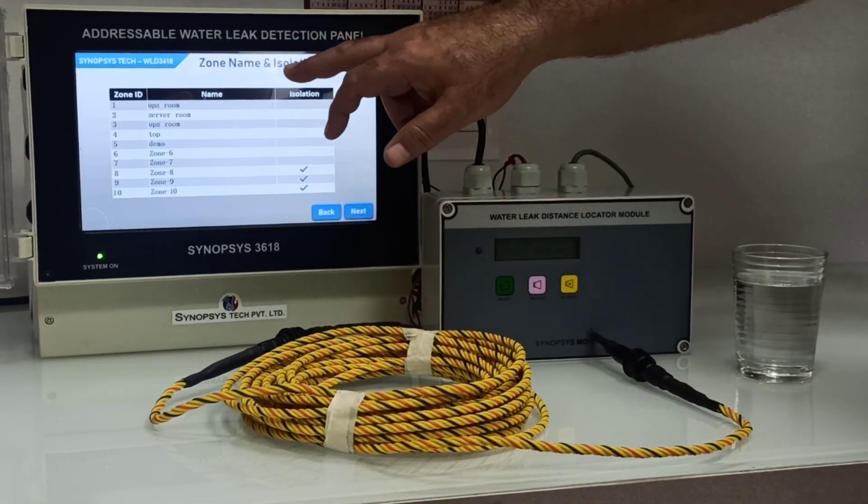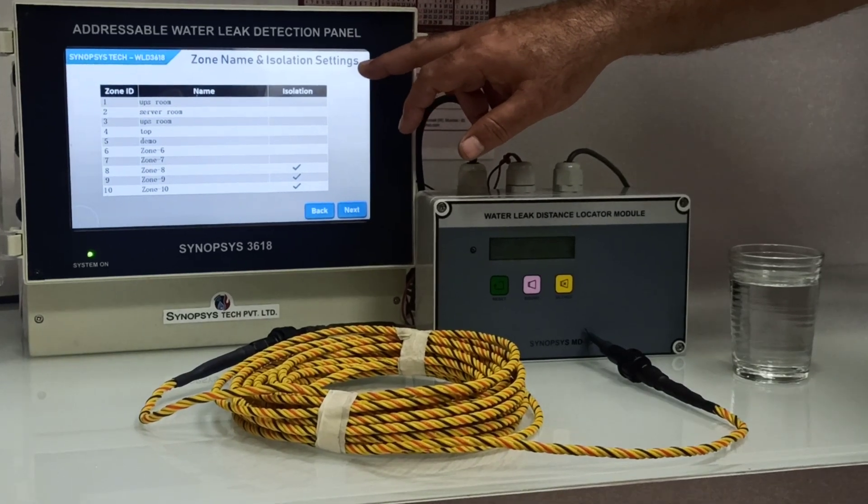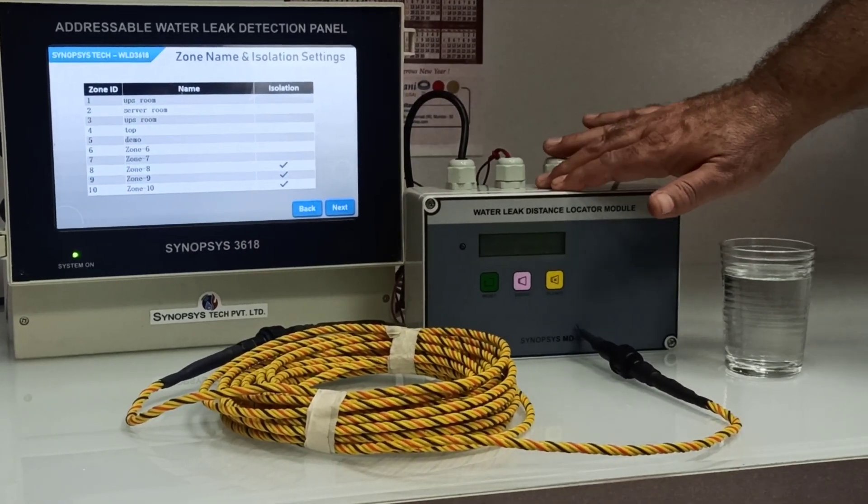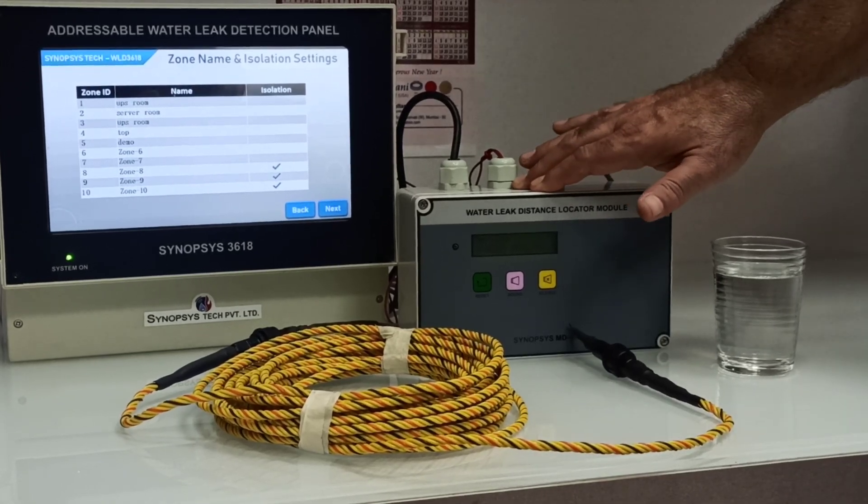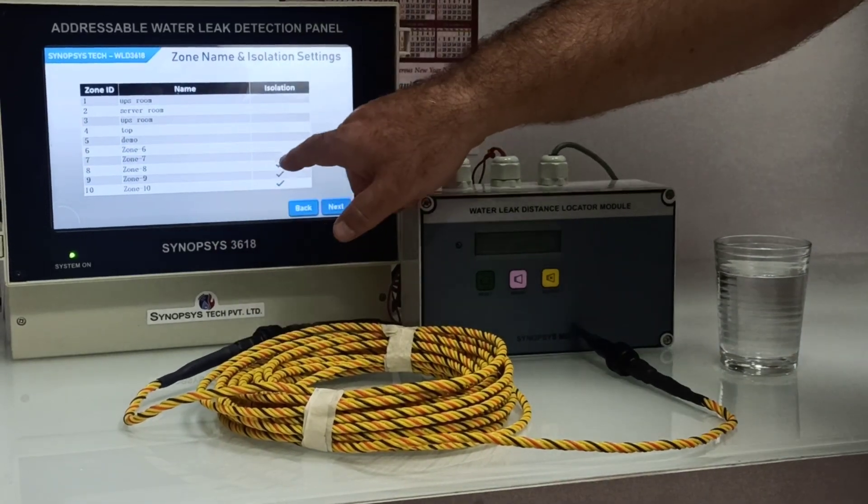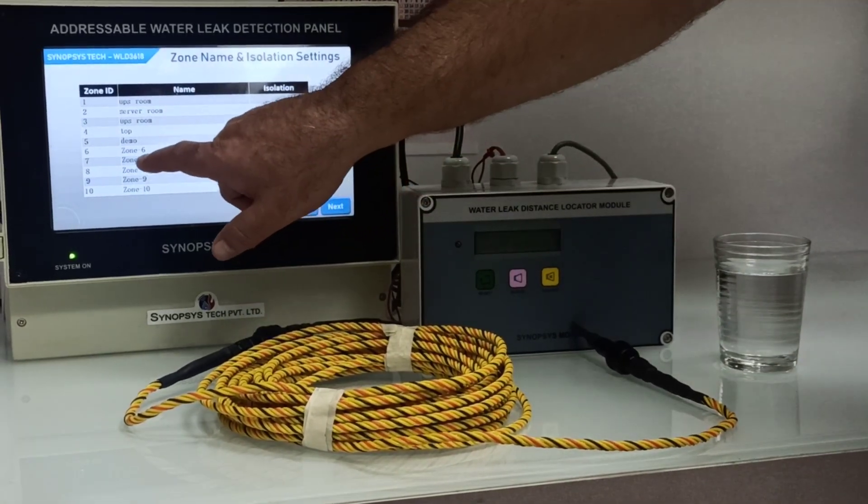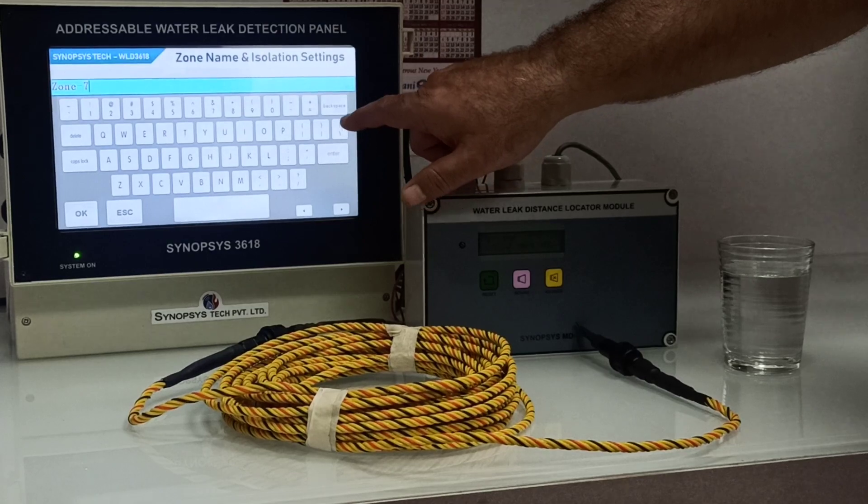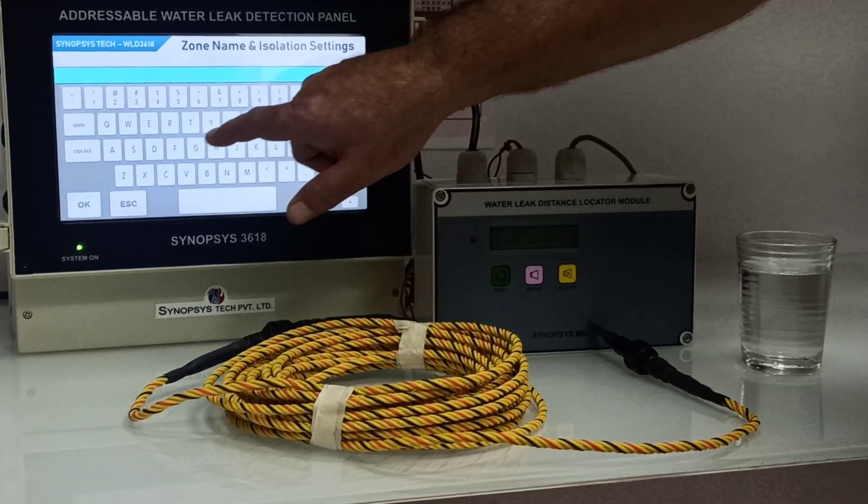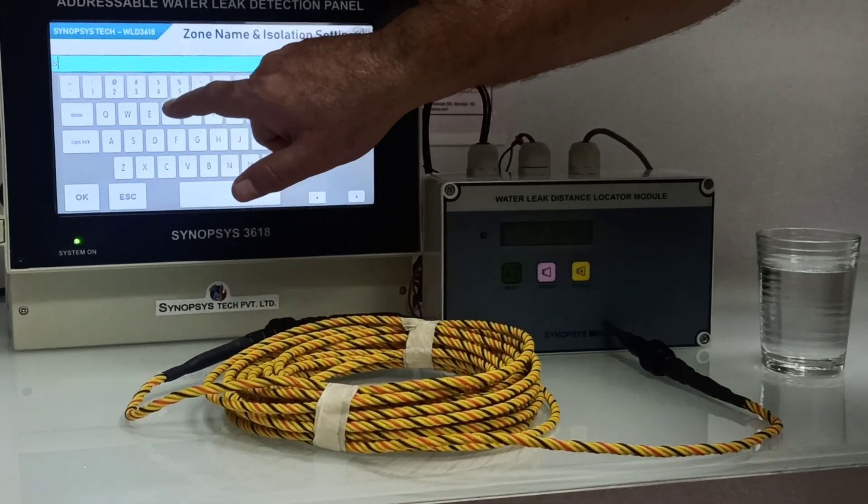We have zone name and isolation settings. You can name the zones - that is the SIM modules. The SIM modules can be named as whichever room they are placed, like server room. So suppose zone 7, we name it as server room.